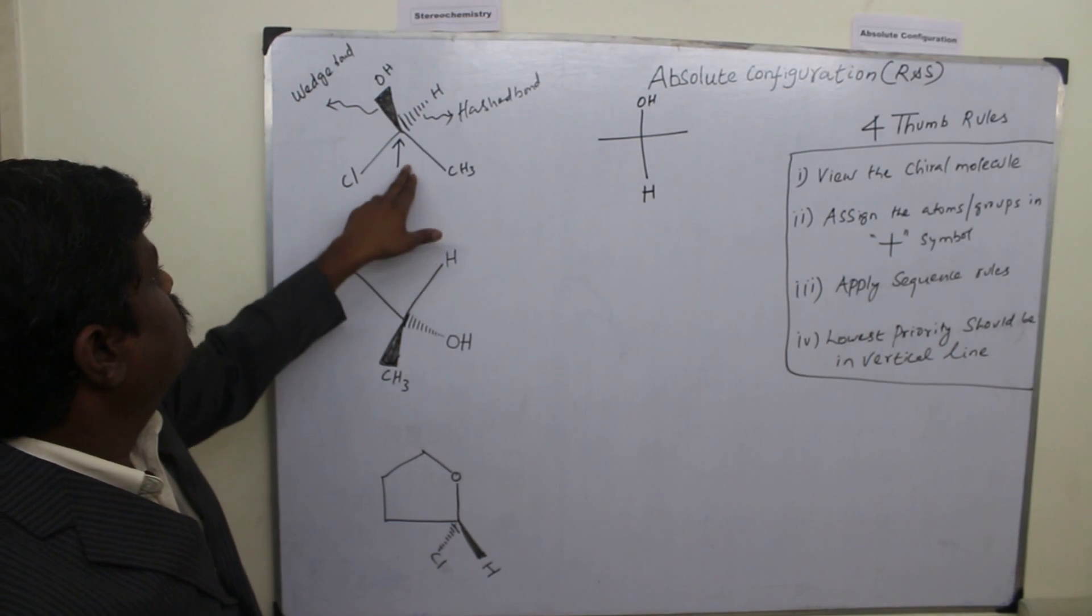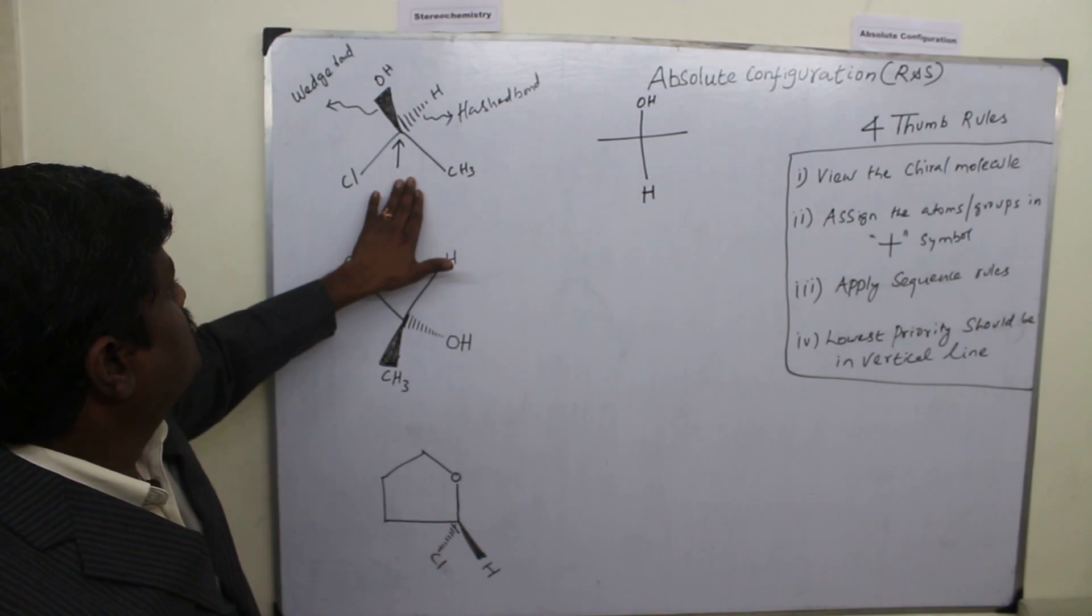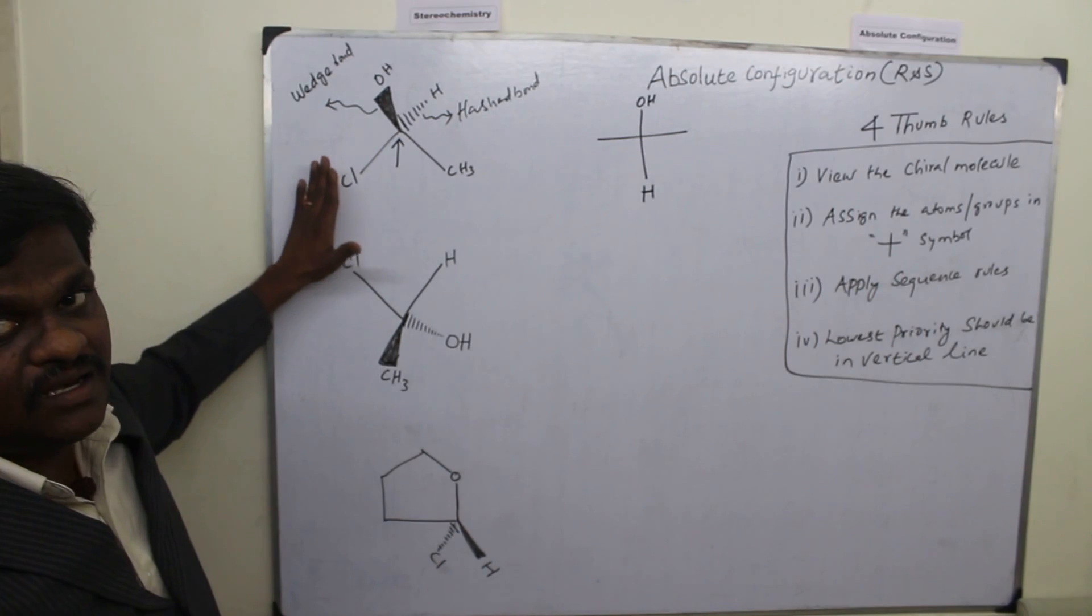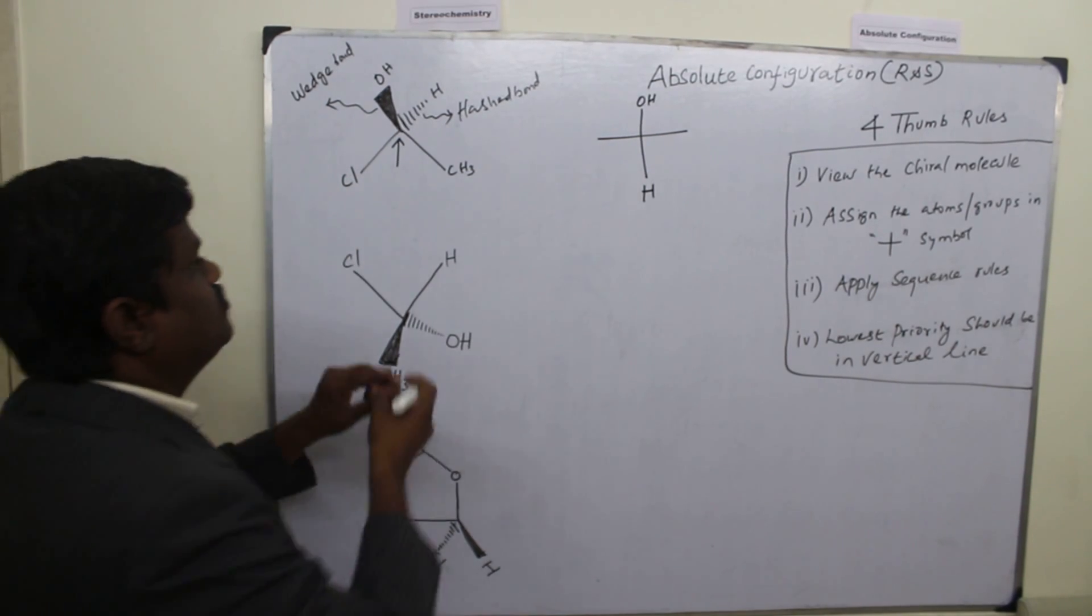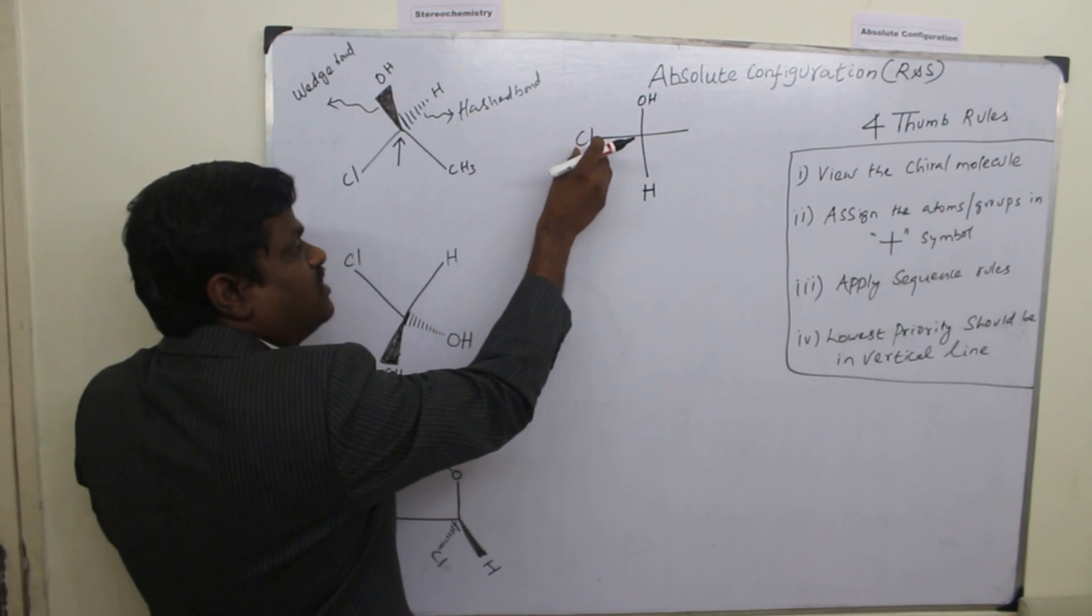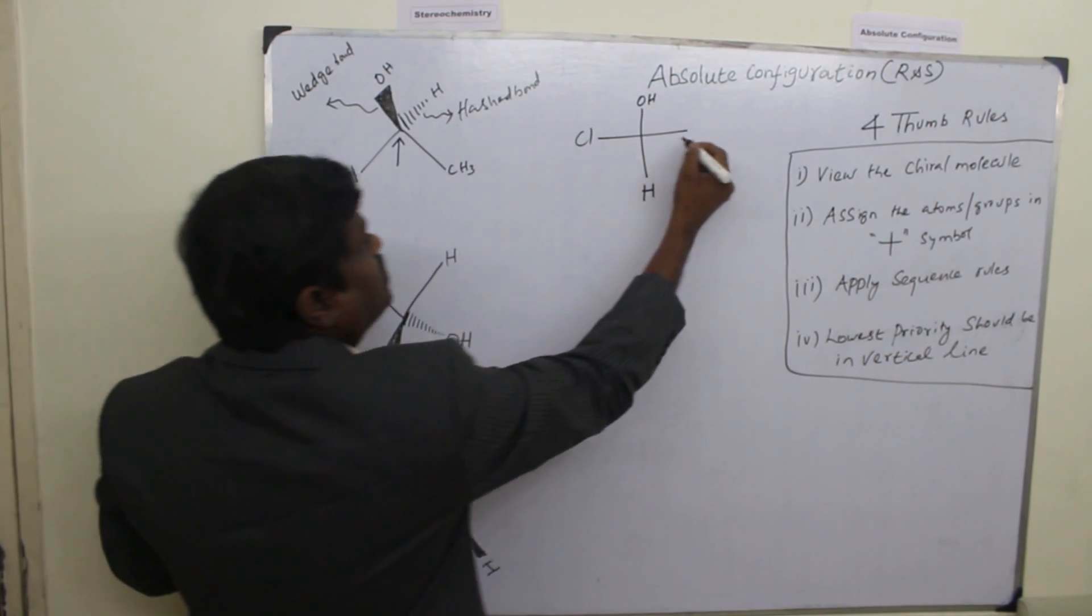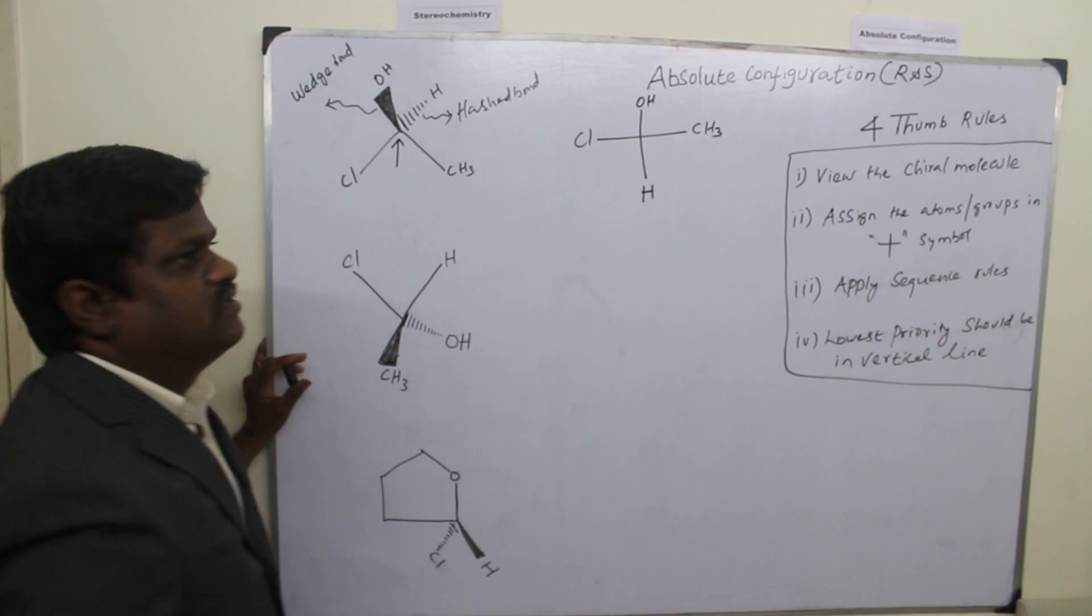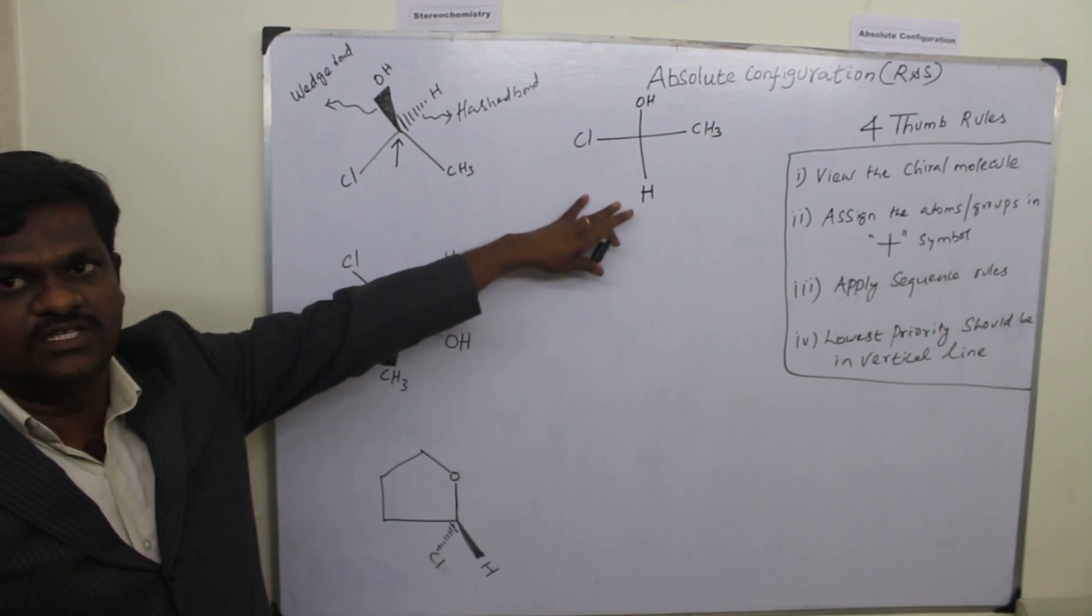As I told, we have to view in this direction. When we are viewing in this direction, this atom is in our left hand side. So you put that one on our left hand side of the horizontal line. And the remaining is on the right hand side of the horizontal line. This second rule is finished.